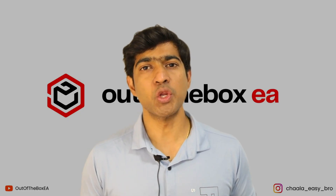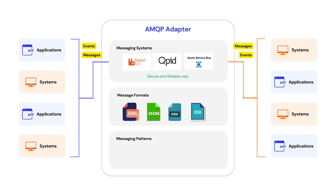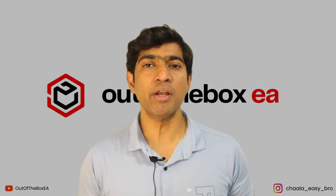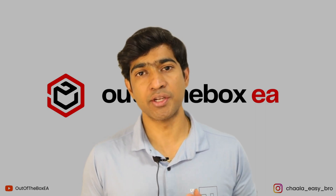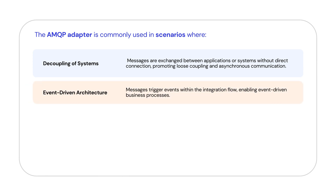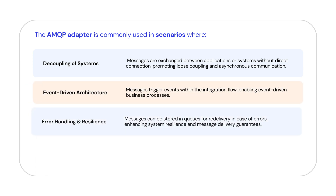We can use AMQP adapters in various messaging patterns such as point-to-point, publish and subscribe, and request and reply. The AMQP adapter is commonly used in scenarios like decoupling of systems, event-driven architecture, error handling and resilience implementation, and high-throughput and scalable solutions.